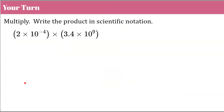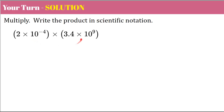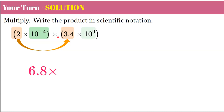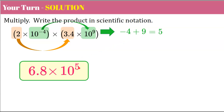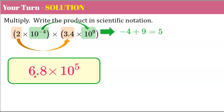Are you ready to do your practice? We're going to multiply and write the product in scientific notation. Pause, do your best work, and come back. Welcome back — we're multiplying. First, identify our factors and multiply: 2 multiplied by 3.4 is 6.8. Now the powers: we're multiplying, so keep the base 10 and add the exponents. Negative 4 plus 9 is positive 5. Our power is 10⁵. It's in scientific notation because 6 is greater than or equal to 1 and less than 10.